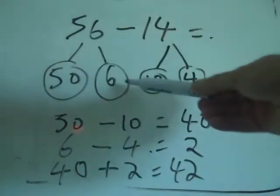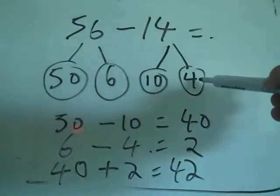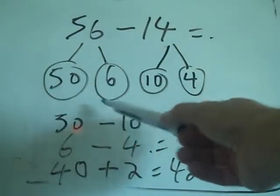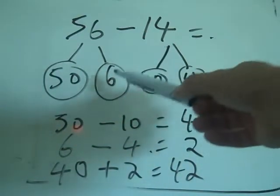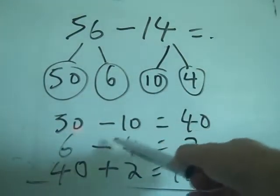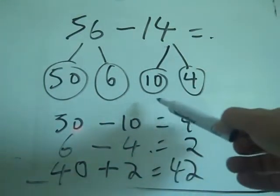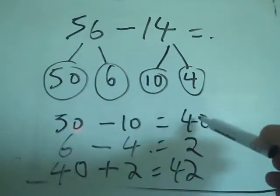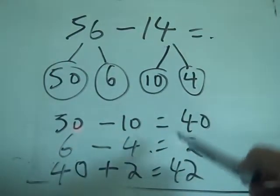So I broke it into the two parts, 50 and a 6, 10 and a 4. I took the two big bits away from each other, 50 minus 10 is 40. I took the two little bits away from each other, 6 minus 4 is 2. And then I added together what my answer was, 40 and 2, 42.